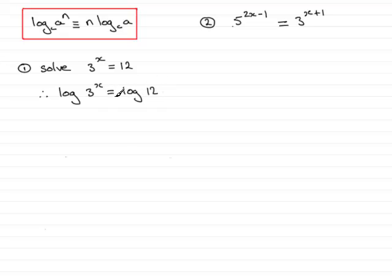So they're both in base 10. Now I can use this rule where I take the power, in this case x, and bring it to the front of log 3. So I can say that, therefore, x log 3 is equal to log 12.